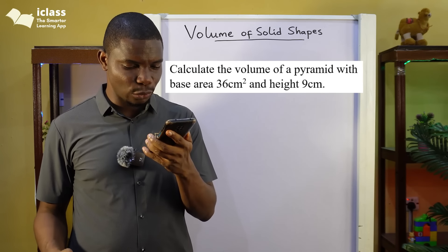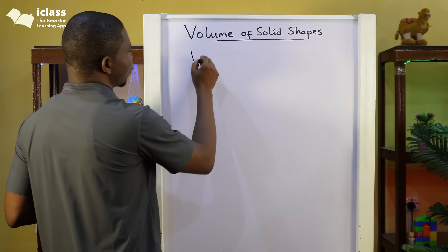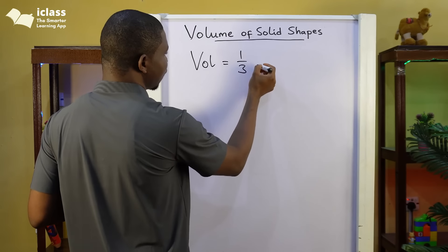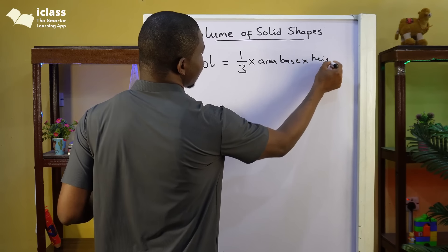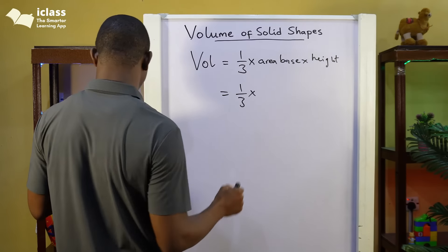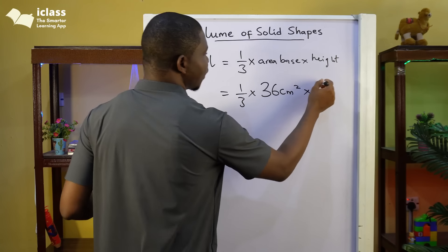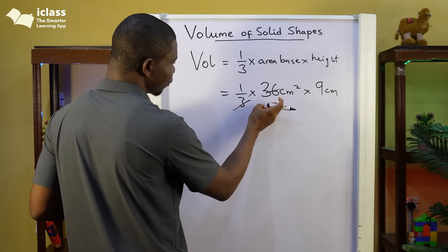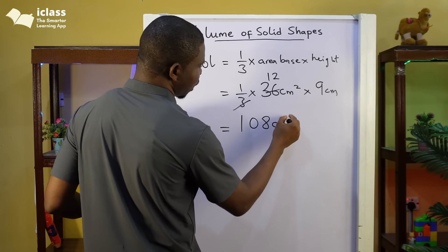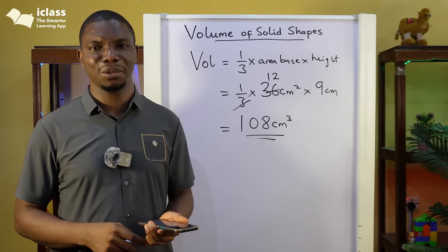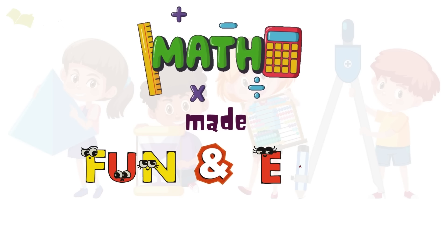Next question: calculate the volume of a pyramid with base area 36 centimetres squared and height 9 centimetres. Remember the volume of a pyramid is one-third times area of base times height. So we have one-third times 36 times 9. Three into 36 is 12, and 12 times 9 gives us 108 centimetres cubed. The volume of this pyramid is 108 centimetres cubed.